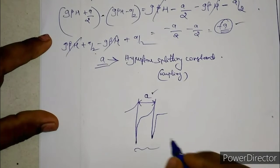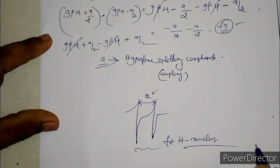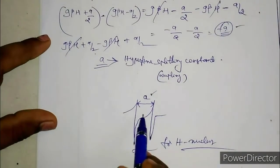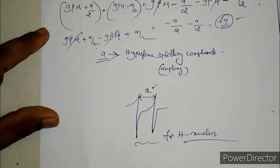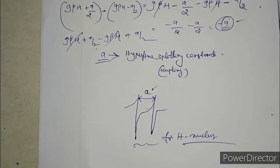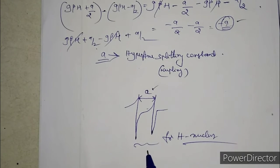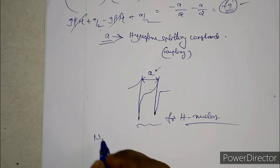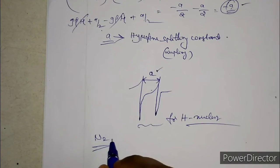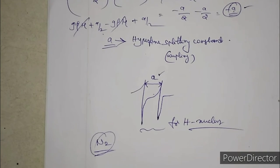This is the ESR spectrum for the hydrogen atom. For hydrogen, you will get two lines and the difference between them is A. If you have any doubts about the ESR spectrum of hydrogen, you can ask in the comment section. In the next class, we will see the ESR spectrum of nitrogen or some other species. Thank you for watching.